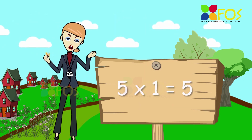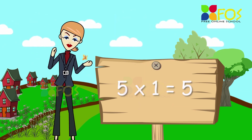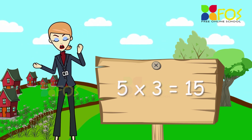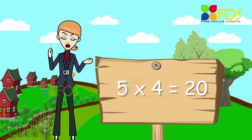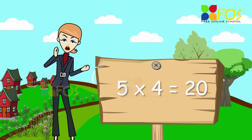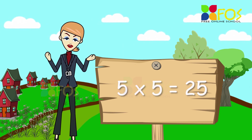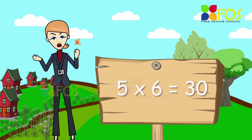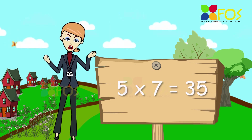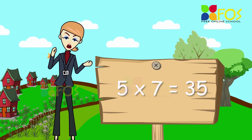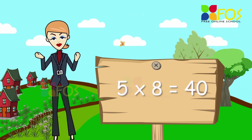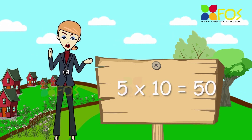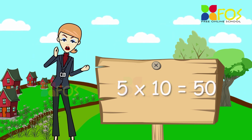5 1s are 5, 5 2s are 10, 5 3s are 15, 5 4s are 20, 5 5s are 25, 5 6s are 30, 5 7s are 35, 5 8s are 40, 5 9s are 45, 5 10s are 50.